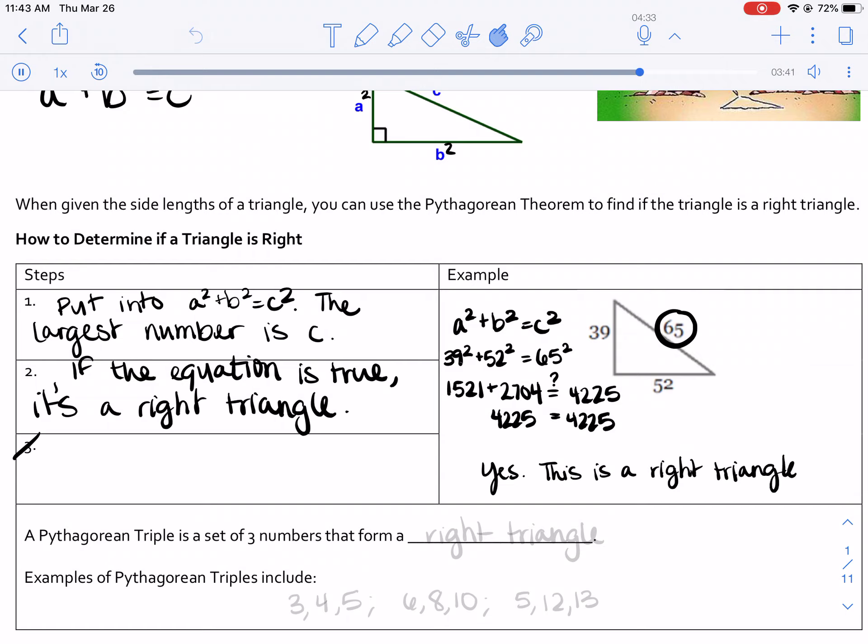Now, it might be helpful to memorize something called a Pythagorean triple. Those are numbers that together make a right triangle. And a really common one is 3, 4, 5.